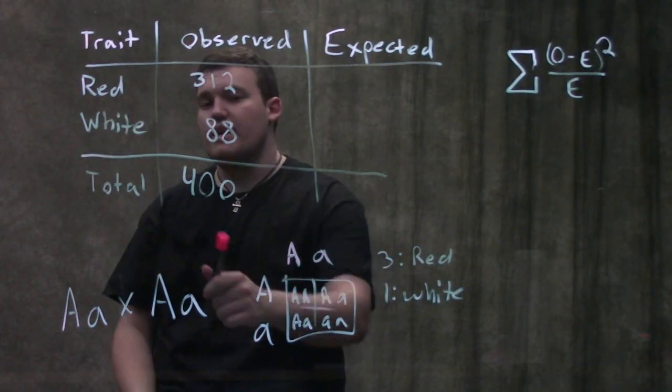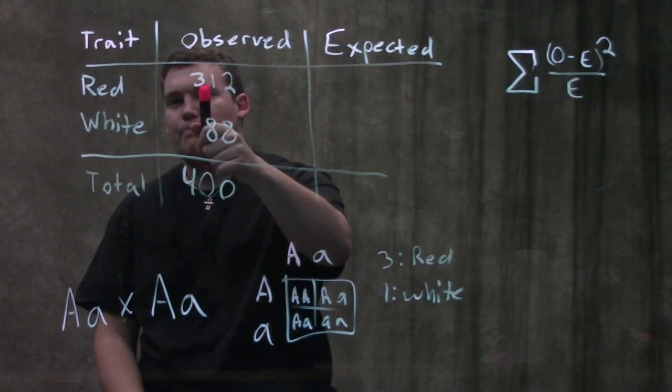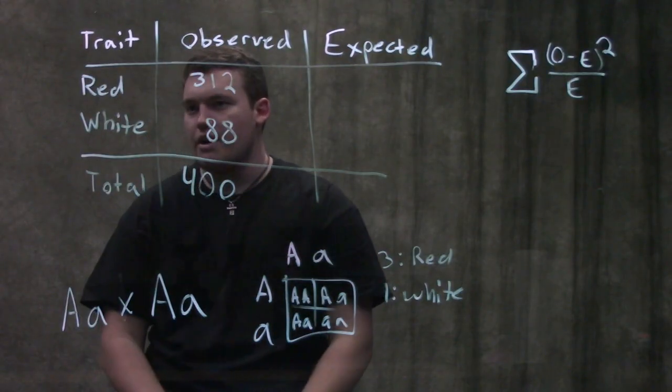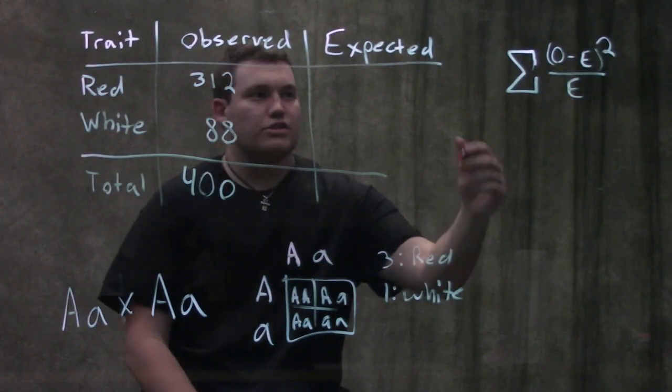So they're gonna say we had 400 babies of whatever's red and whatever's white and this is the ratios that we ended up with. So what's gonna happen here is we're gonna do this thing called a chi-squared, this little weird symbol is chi-squared.